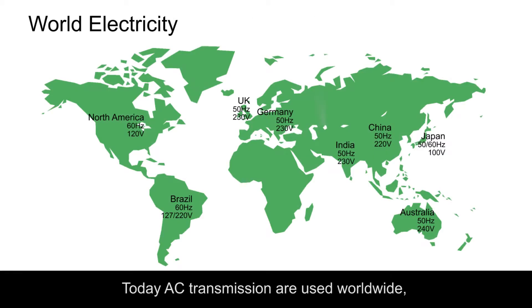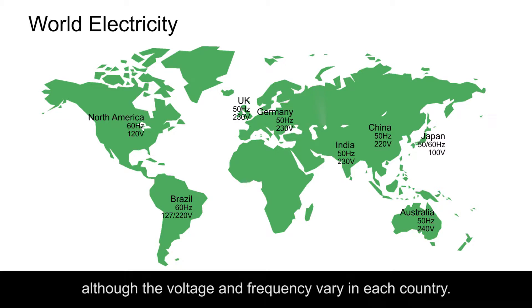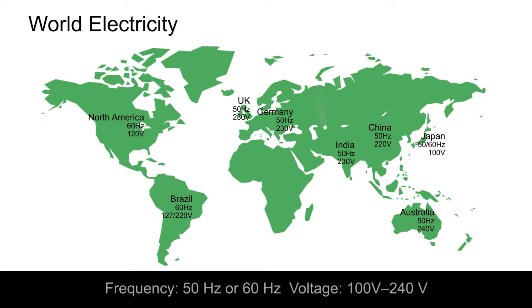Today AC transmission is used worldwide, although the voltage and frequency vary in each country. Frequency: 50 Hz or 60 Hz. Voltage: 100 volts to 240 volts.